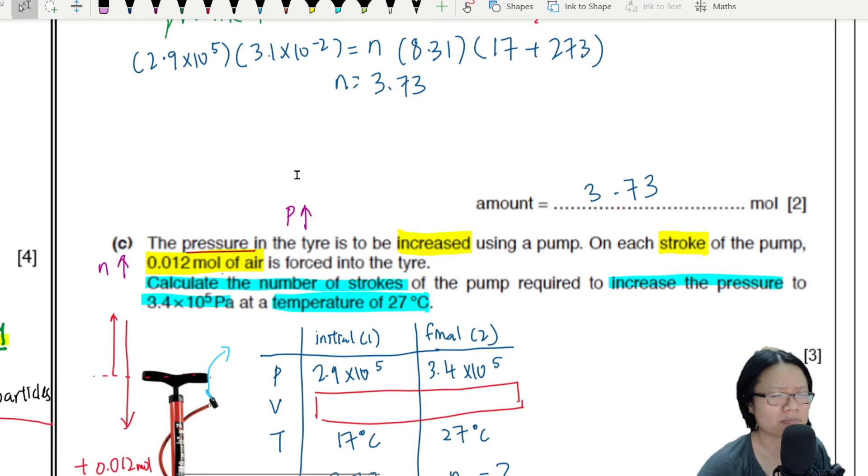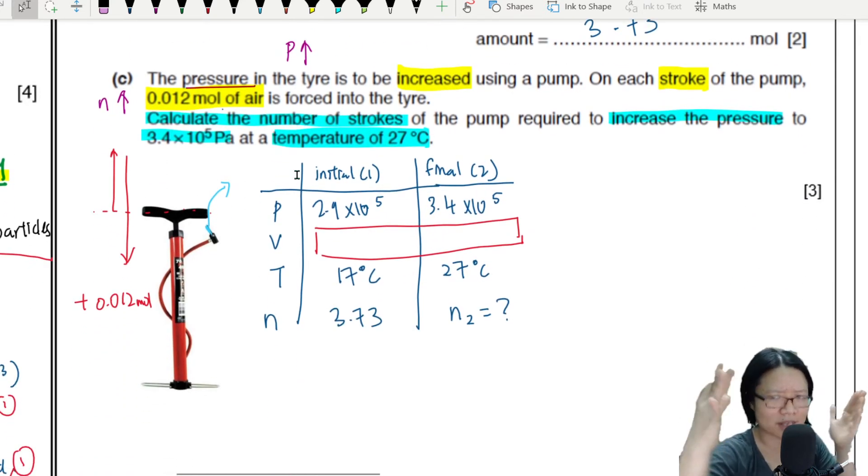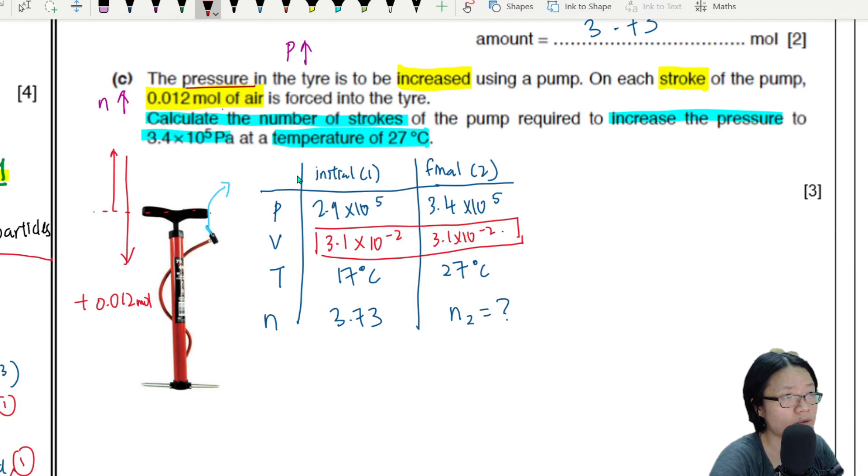So we assume that whether we add a little bit of air or remove a little bit of air, there is negligible change in volume. It's a bit like pumping a basketball - the size of the basketball roughly will stay the same, roughly. So it's going to be constant. It's going to be 3.1 times 10 to the power of negative 2 on both sides.